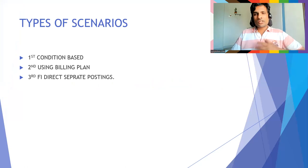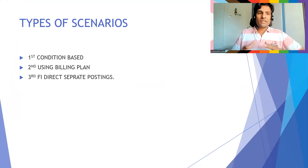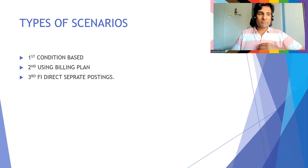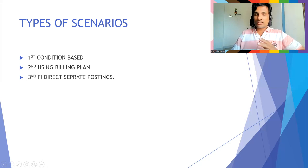There are different scenario types. The first is the condition-based scenario, using SD pricing where FI handles it — I will explain the limitations. The second is using a billing plan, with its benefits and bottlenecks. The third is FI direct separate posting, which is simpler compared to the other two. I will try to cover these scenarios in maximum detail.